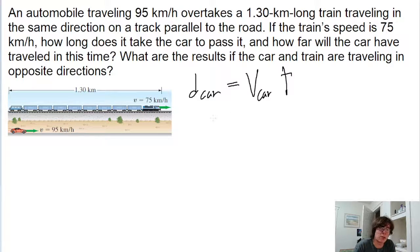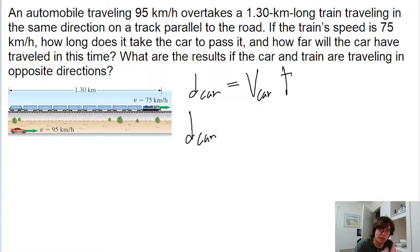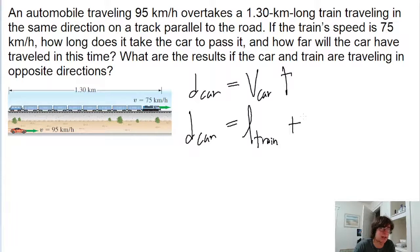We can also represent this in terms of the distance the train is traveling, because the car needs to travel the length of the train plus however far the train travels. So the distance the car travels can also be represented as the length of the train plus the distance the train travels. And since distance is speed times time, that's the speed of the train multiplied by the exact same time interval.